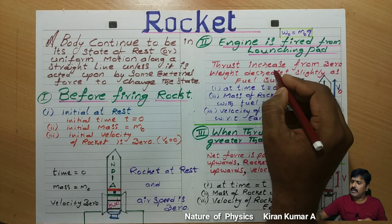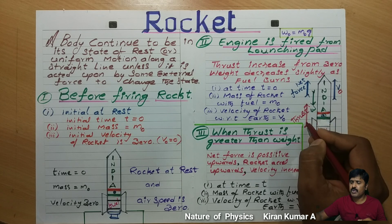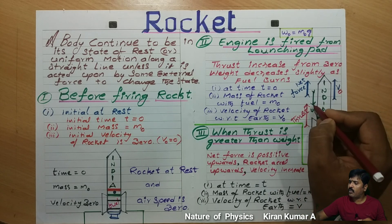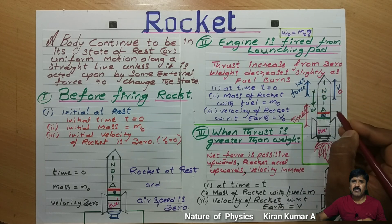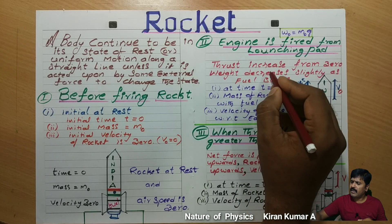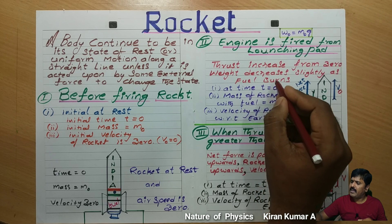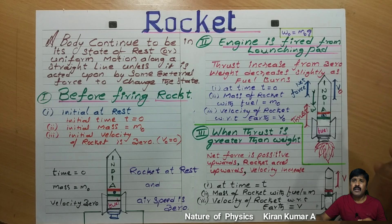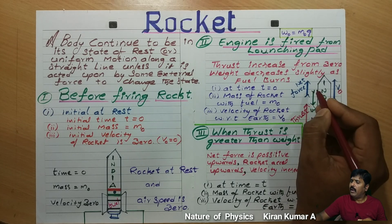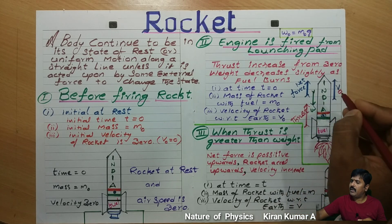Next, the engine is fired from the launching pad. Thrust is developed, acting in the upward direction as clearly shown in the diagram. Weight acts in the downward direction. Net force acts upward — it is the resultant force. The thrust increases from zero while the weight decreases slightly as fuel is burned.